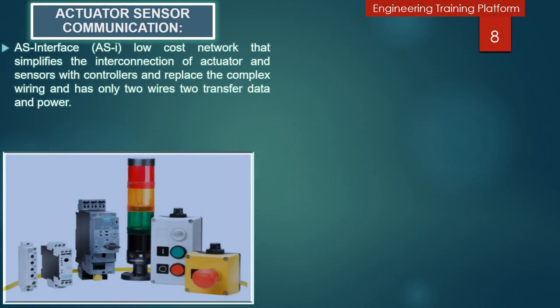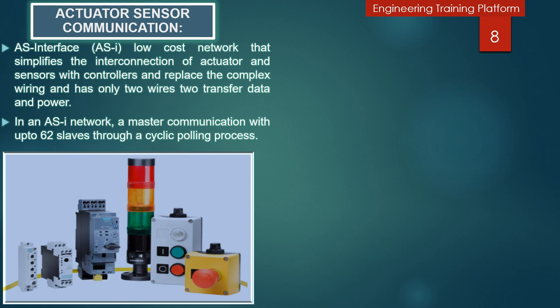PROFIBUS AS-Interface is an open, low-cost network that simplifies the interconnection of actuators and sensors with controllers. The AS-Interface uses a two-wire cable — one wire for data and one for power — which replaces complex wiring. In a PROFIBUS AS-Interface network, a master communicates with up to 62 slaves through a cyclic polling process. The master is often a PLC with a communication module.